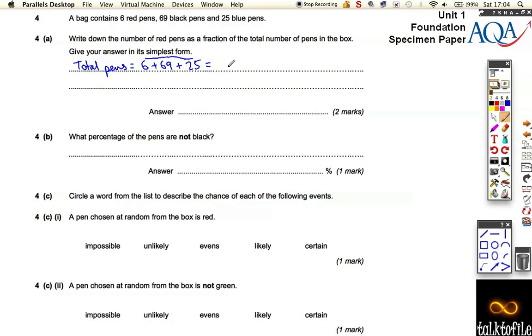And very conveniently for us, they add up to 100. So we've got to write the fraction of red ones. Well, there's 6 red ones out of the 100, so you get one mark for writing 6 out of 100 down.